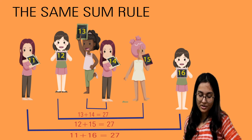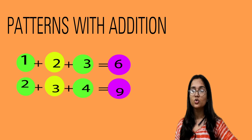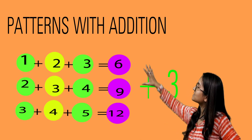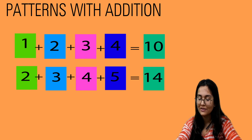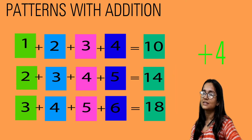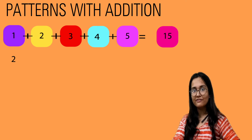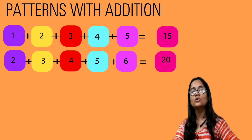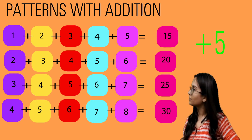Then we have patterns with addition. The pattern shows that 1+2+3=6, then 2+3+4=9, then 3+4+5=12 — the sum grows by 3 each time. Similarly, 1+2+3+4=10, 2+3+4+5=14 — the sum grows by 4 each time. The number of digits we take determines by how much the sum grows. For example, 1+2+3+4+5=15 and 2+3+4+5+6=20, a difference of 5.